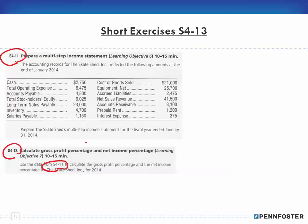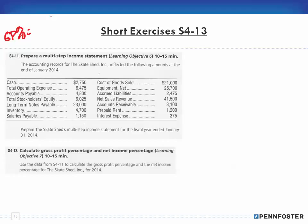Calculating the gross profit percentage and net income percentage was covered under the three videos for 'focus on decision-making.' You can look in your textbook and see the formula, but you might also want to check out the last video or two on theory for chapter 4, which gives additional insight into working with those formulas. The formula for gross profit percentage is: gross profit percentage equals gross profit over net sales revenue.